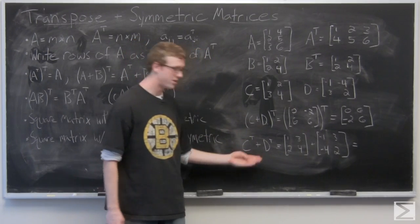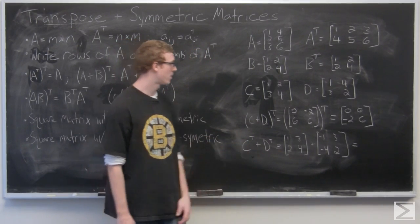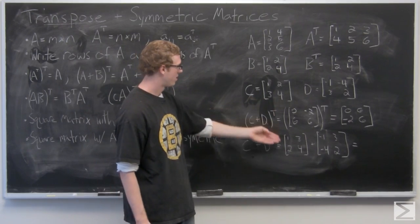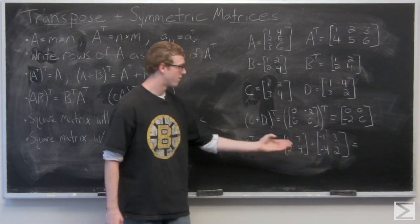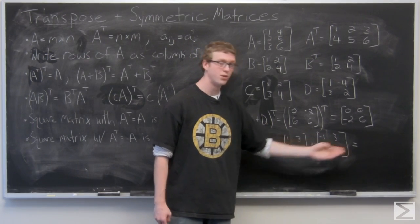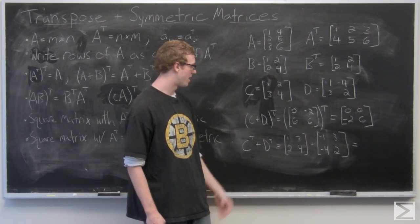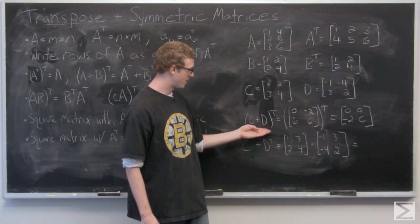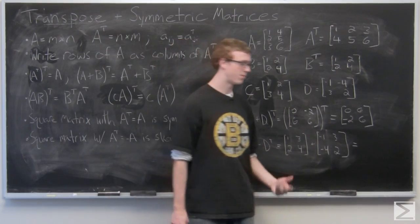Now we're going to take a look at C's transpose plus D's transpose. We've already done them out. C transpose is 1, 3, 2, 4. And D's transpose is negative 1, 3, negative 4, 2. Just add them together component wise. And that is going to be C plus D, T equals C, T plus D, T.